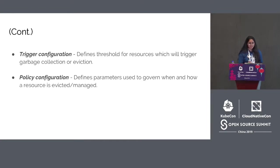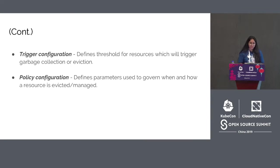The garbage collection-related configuration options can be broadly classified into two categories. The first is trigger or signal configurations, which define thresholds for resources that will trigger garbage collection or eviction. The second is policy configuration, which defines parameters governing when and how a resource is evicted or managed.